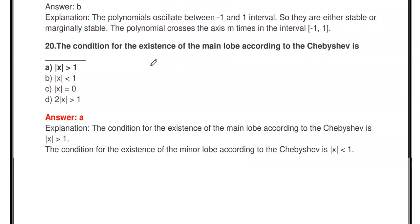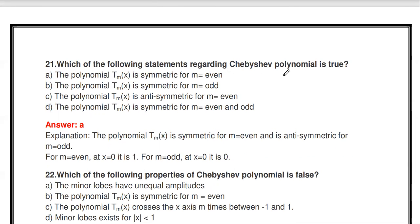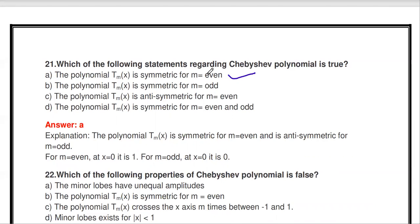The condition for the existence of the main lobe according to Chebyshev is that the modulus of x is greater than 1. So |x| > 1 is the condition for the occurrence of the main lobe. Regarding symmetry: the polynomial Tₘ(x) is symmetric for even values of m.